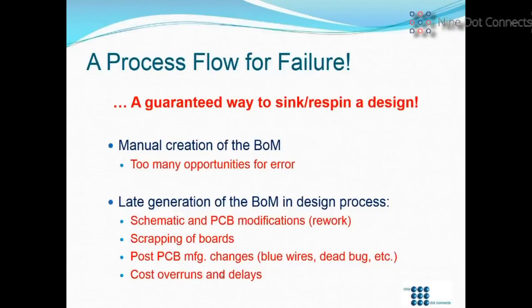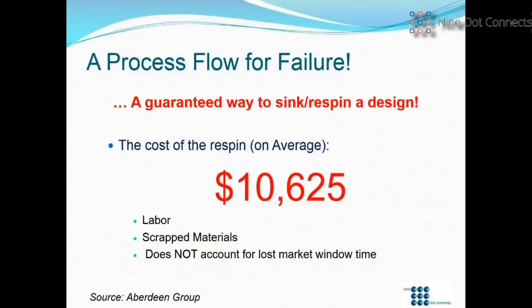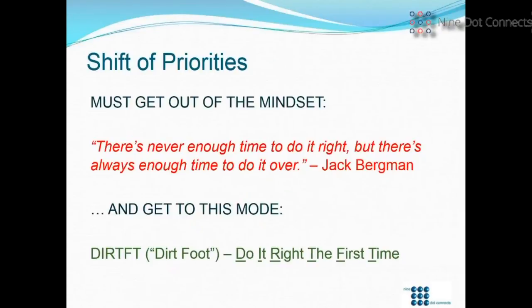When you're working in this process, you're taking a bet — and according to the Aberdeen Group, on average a re-spin costs about $10,000 in labor from your company, labor paid to the manufacturer to make the board again, and scrap material. And that doesn't account for lost market window time. So if you're working in that flow, the odds are really stacked against you. We have to get out of the mindset of 'there's never enough time to do it right, but there's always enough time to do it over.' We want to get into the mode of DIRFT — do it right the first time.